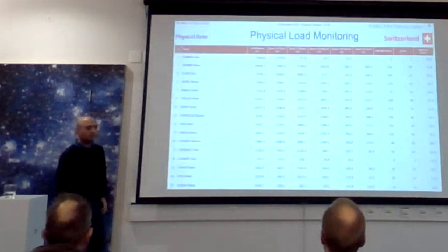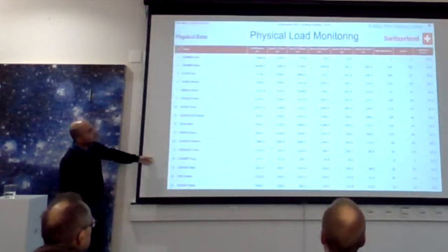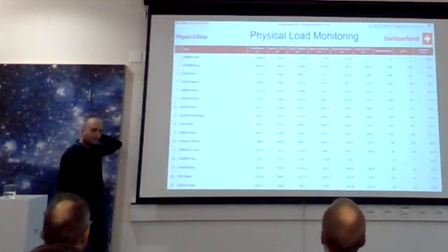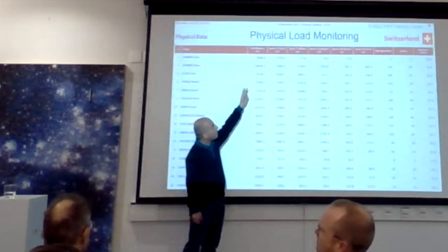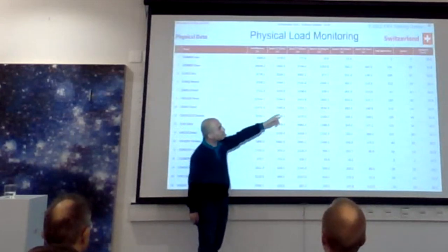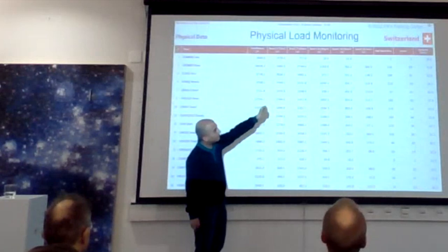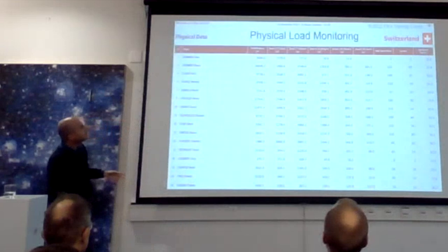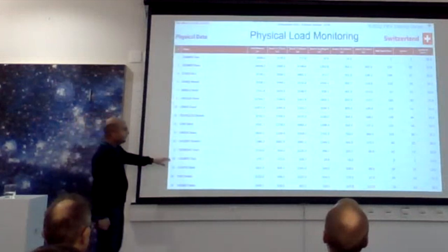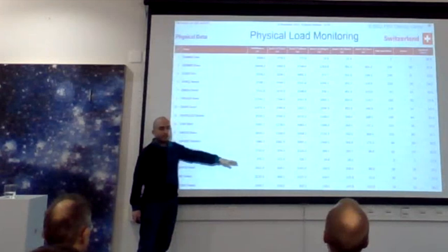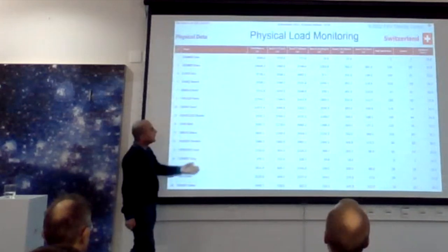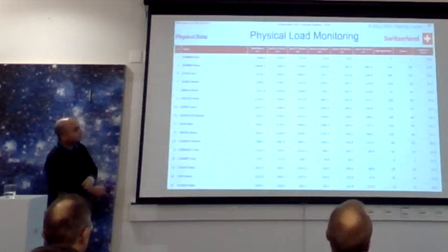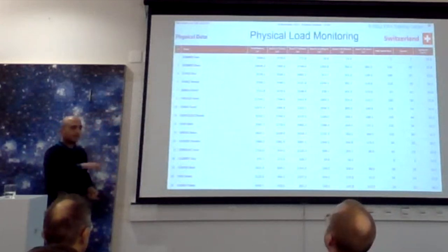Another application is physical load monitoring. Here is an official report published after an Inter Milan match. Based on tracking data, it shows how many meters each player ran, the distance covered at different speeds, and the number of sprints. The person responsible for reviewing this table is looking for unusual numbers — if a player is not running as expected, they need to follow up. This report is typically published a few hours after each match and posted at the training center.